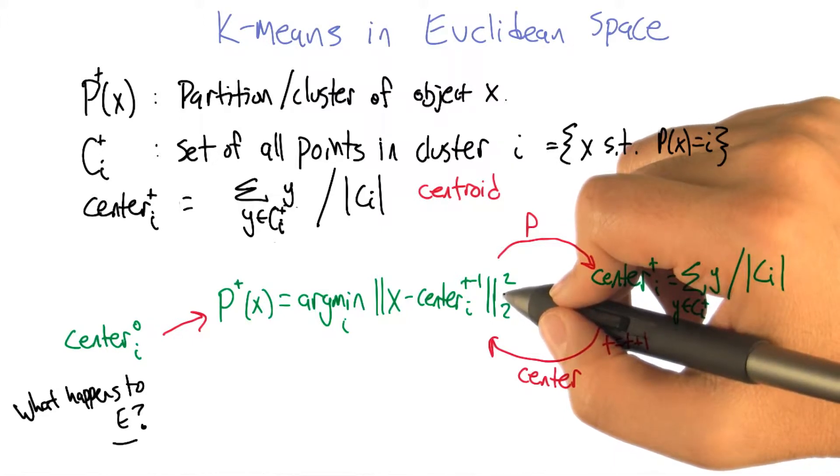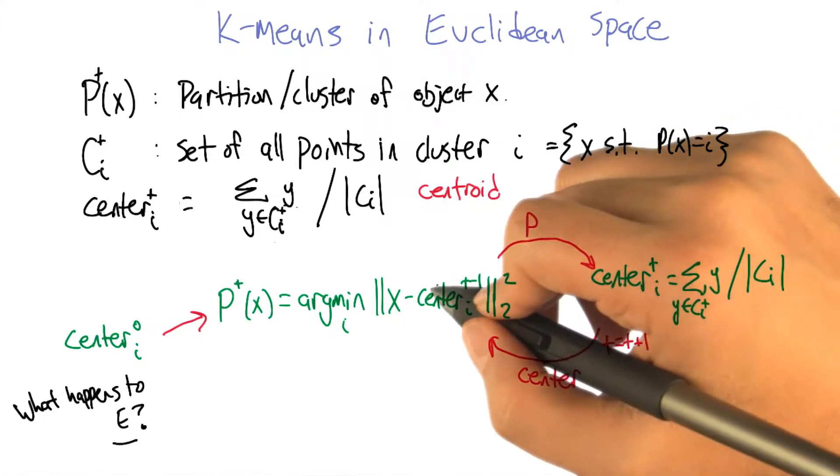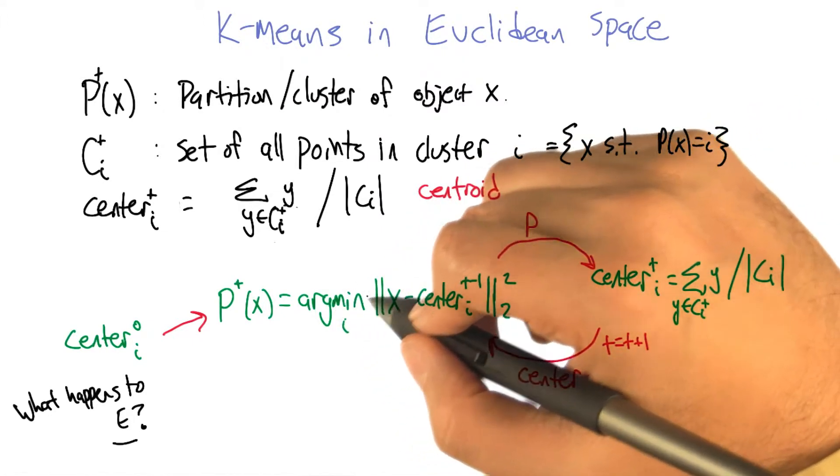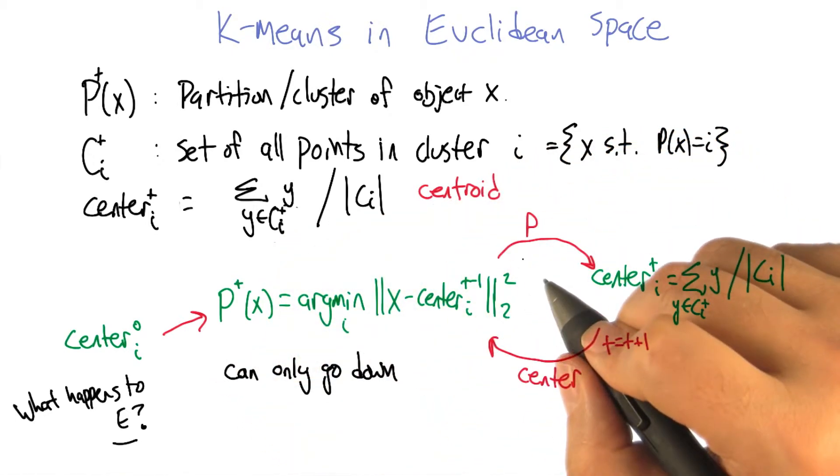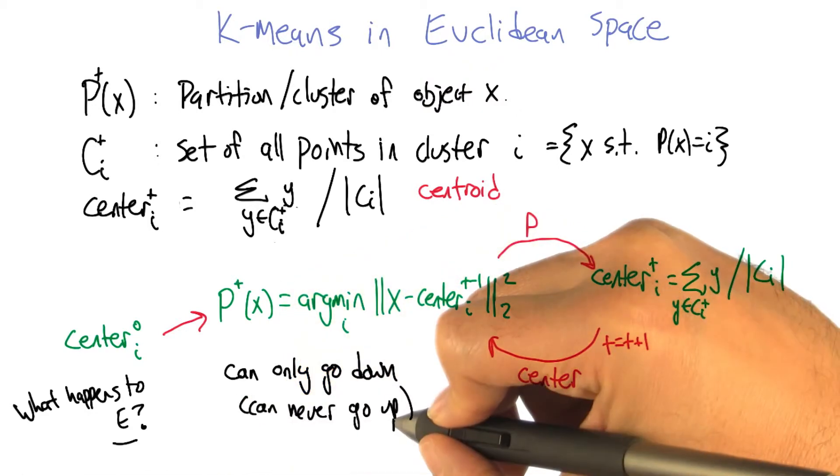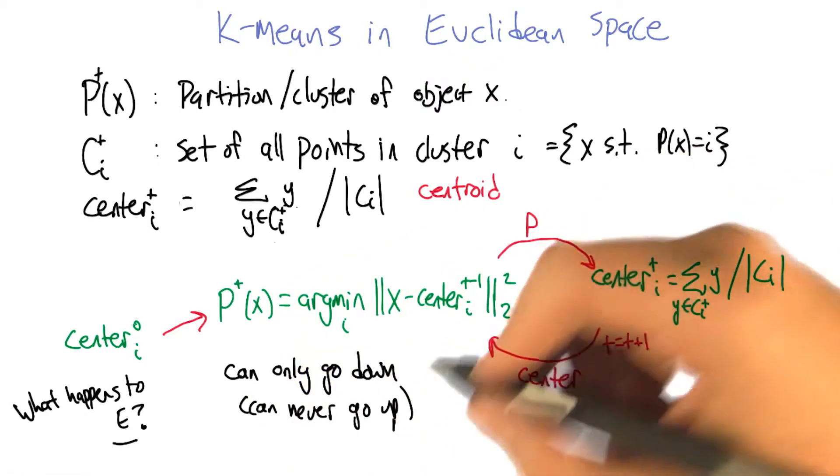So that means that the error either stays the same if the point stays in the same cluster, or it goes down if it goes to a better cluster. That makes sense. So it can only go down. Well, it can never go up. That's different than saying it can only go down. Agreed, because it could stay the same.